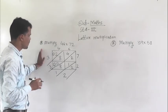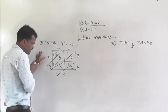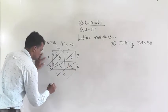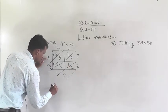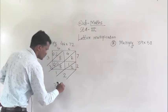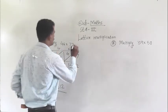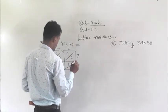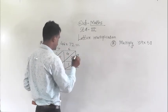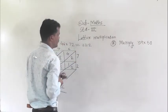Now all process is finished. Write the numbers from left to right. So here 3, then 3, then 1, then 2. This is the product of 46 multiplied by 72. So 46 multiply by 72 is 3312.